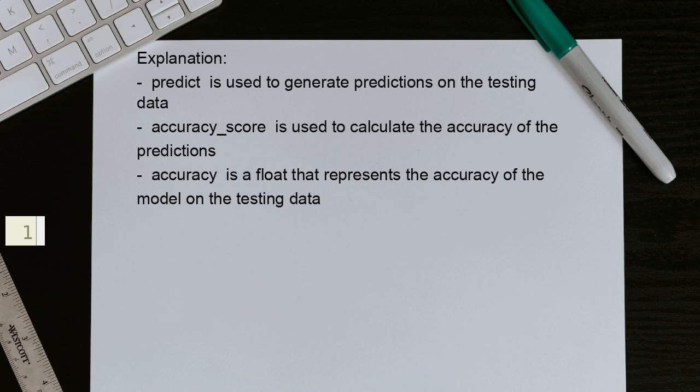Let's continue. Explanation: predict is used to generate predictions on the testing data. accuracy_score is used to calculate the accuracy of the predictions. Accuracy is a float that represents the accuracy of the model on the testing data.